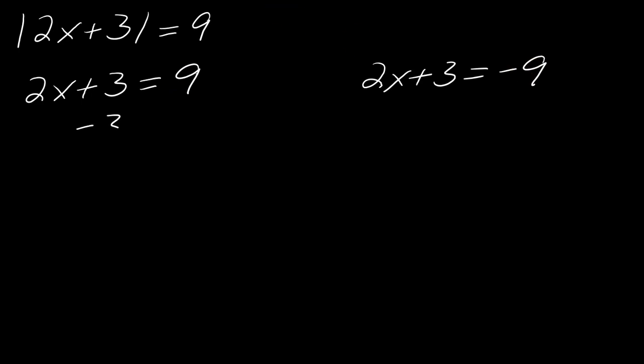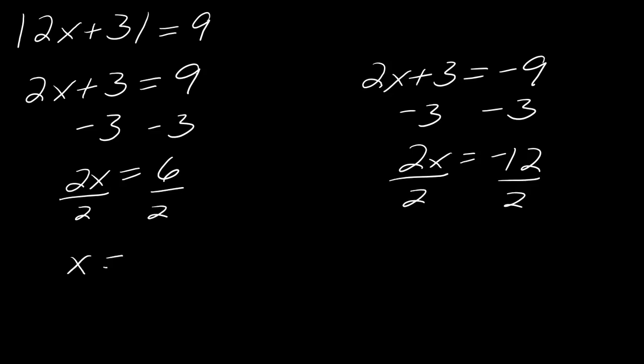So you'll just solve each of these. So I get this will equal 2x equals 6. Well, if I subtract 3 from here, I get 2x equals negative 12. And then I just divide everything by 2 to get x equals 3. That's one solution. Or the other solution would be x equals negative 6.